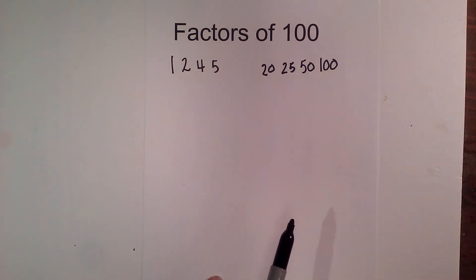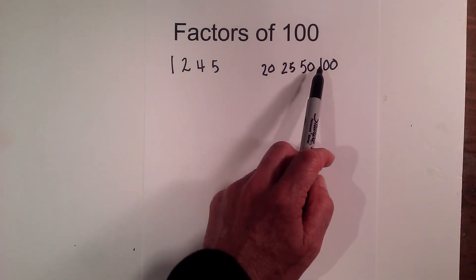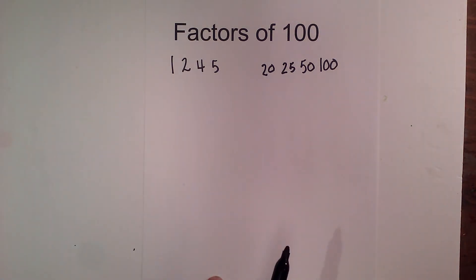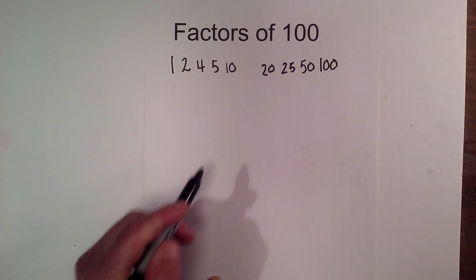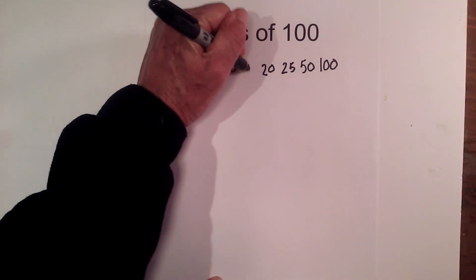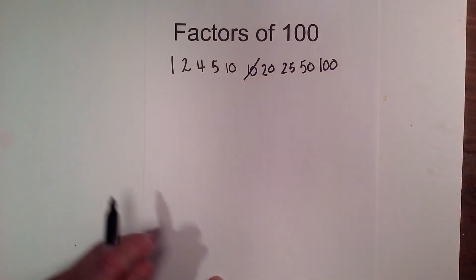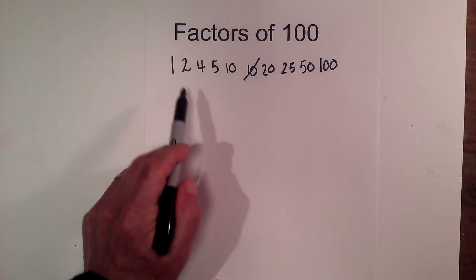9 is out because the rule for 9 is the sum of the digits is divisible by 9, and so 1 plus 0 plus 0 doesn't work. And 10 goes into 100 10 times because it ends in a 0, and I'm going to write the 10 here and cross it out because I don't want to write it twice.